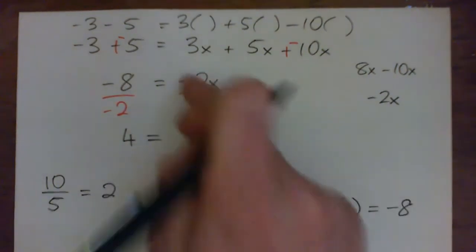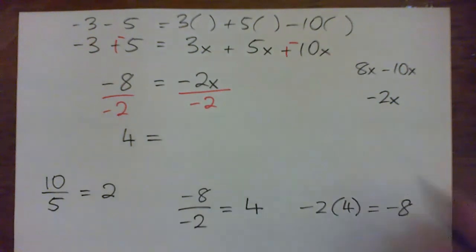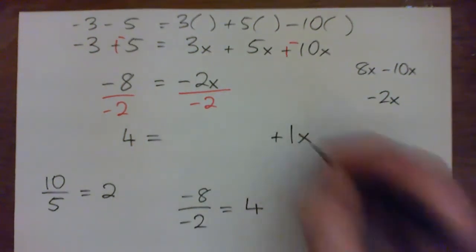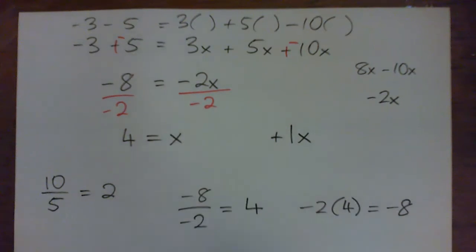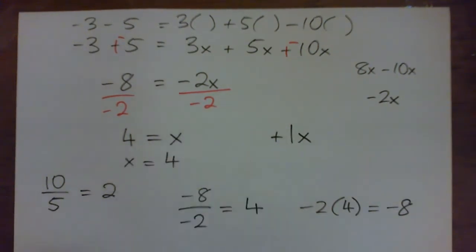And on the right, we have negative over negative positive. 2 over 2 is 1, positive 1x. You can write plus 1x if you want to, or just think that's x. So x is 4, or 4 is x. You can write it this way, x equals 4. 4 equals x, same thing.